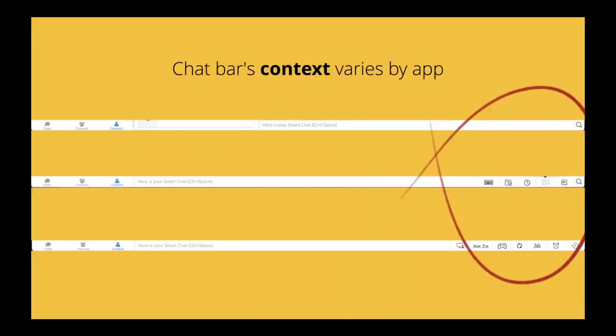The idea of context is that the chat bar will vary by application — you'll see different icons because they offer different functionality depending on the app you're using Cliq within. We're trying to be as smart as possible here.